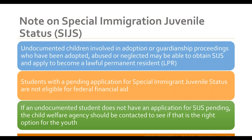If working with undocumented youth — particularly foster youth — they might be eligible for Special Immigration Juvenile Status, which allows certain youth to apply to become a lawful permanent resident. This process can take years, and students are still not eligible for federal financial aid while their application is pending. They'll still need to fill out the California DREAM Act. If working with undocumented foster youth, have them contact their child welfare agency about SIJS status, since they must apply while still minors.